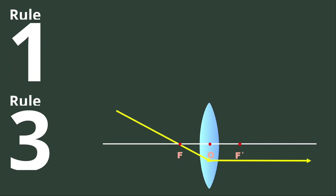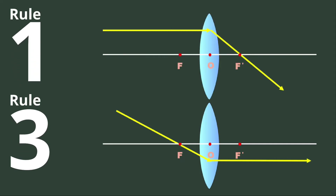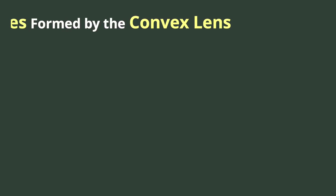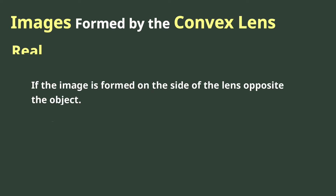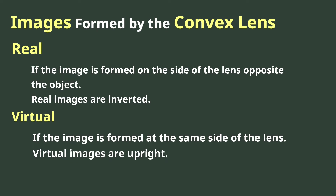Notice that Rule 3 is just the opposite of Rule 1. To simplify the ray diagrams, just consider two rules in determining the properties of the image formed in the convex lens. The type of image formed depends on the position of the object. The image is said to be real if it is formed on the side of the lens opposite the object — real images are inverted. The virtual image is formed on the same side of the lens where the object is located — virtual images are upright.